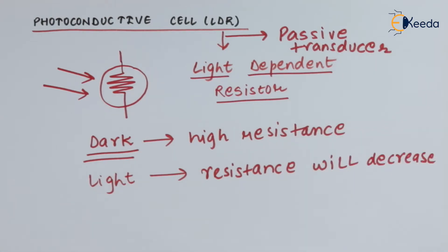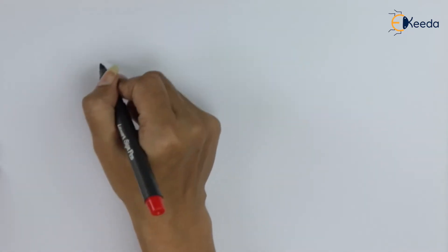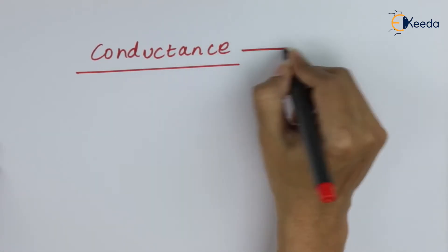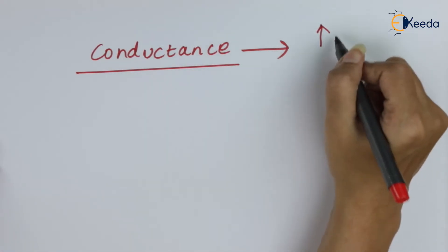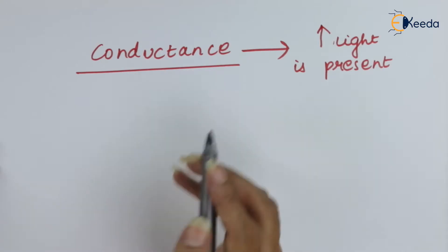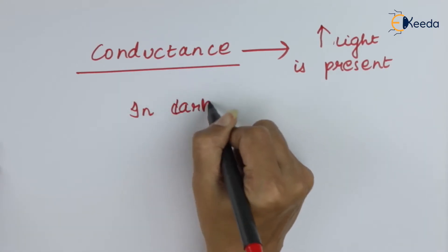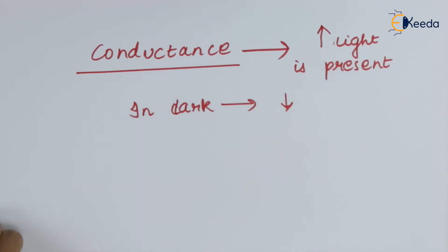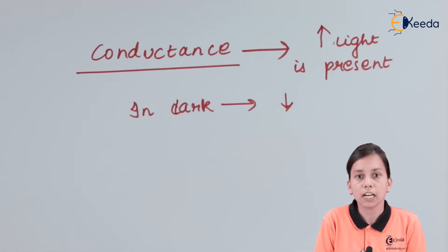Let us talk about the basic principle of photoconductive cell or LDR. When a photosensitive material is exposed to light such that its conductance varies, that kind of material is known as a photoconductive cell because it depends on light. Whenever the conductance varies because of the light — in the presence of light, conductance is increasing, and in dark, conductance is decreasing — this is the basic principle or basic logic behind the photoconductive cell.